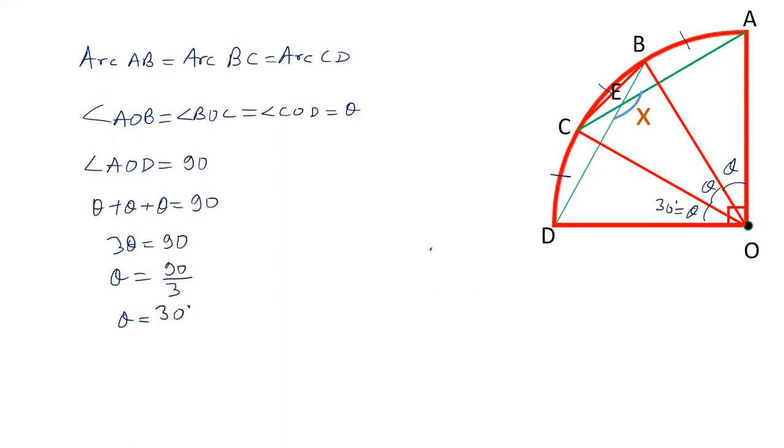After this, we will apply a theorem. In a circle, the angle subtended by an arc at the center is twice the angle subtended by the arc at the circle. So if this is theta, then this is theta by 2. Remember this theorem.